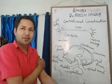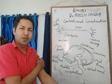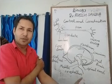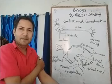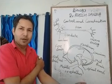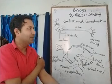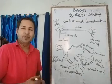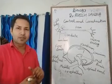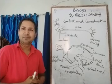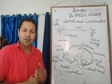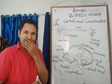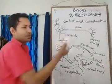Our major chapter is Life Process, and Chapter 2 is Control and Coordination. Control and Coordination includes two systems: the nervous system and the endocrine system. The nervous system includes nerves, and the unit of the nervous system is neurons.